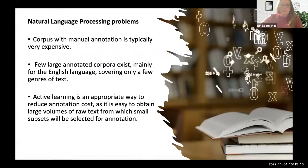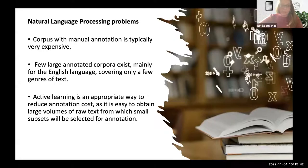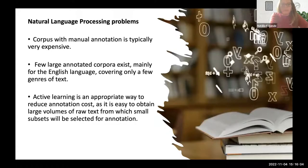In NLP, corpus annotation is typically very expensive. In my use case in the regulatory domain, we need domain experts to classify texts into regulatory categories, which is very expensive and time consuming. There are also under-resourced languages — most labeled data available nowadays is in English, French, and German. For languages like Basque or Catalan, we don't have enough labeled data to train models, and that's a problem active learning can help overcome.